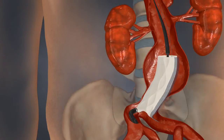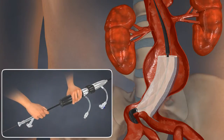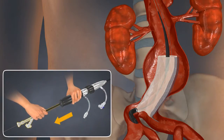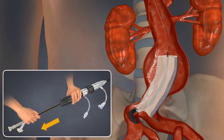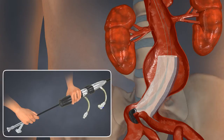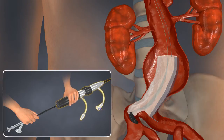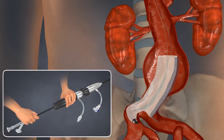To begin deployment of the ipsilateral limb, pin the delivery system handle and pull back on the inner core until the radiopaque tip is just above the bifurcation. To complete the deployment, pin the inner core and pull back on the delivery system handle.